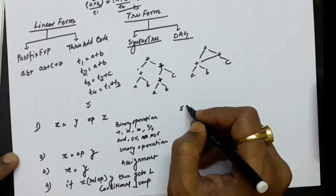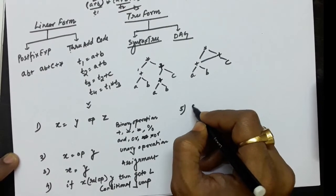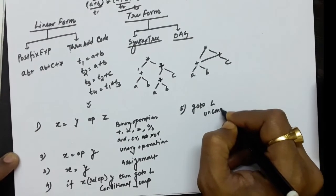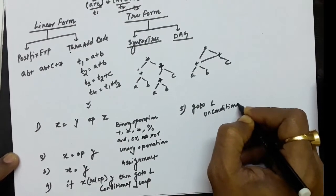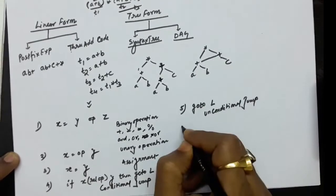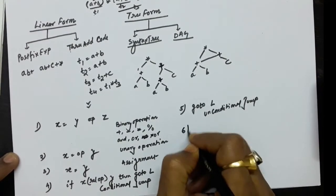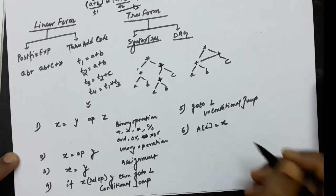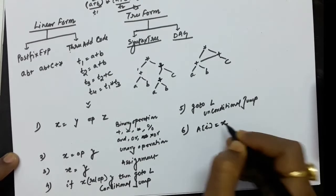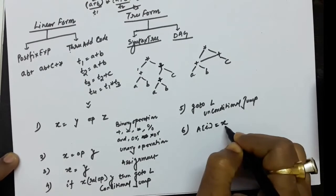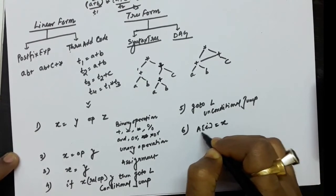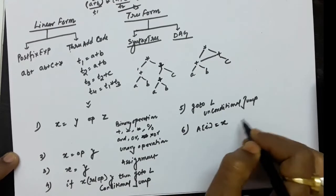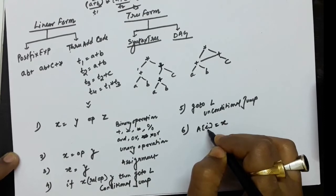The fifth form is the unconditional jump: goto L. The sixth form covers array operations: a[i] = x, where a is the base address, i is the index, and x is the data value stored at the i-th index of array a.